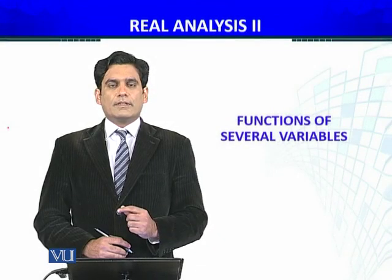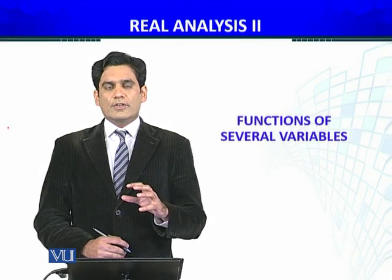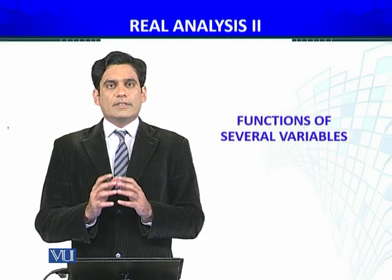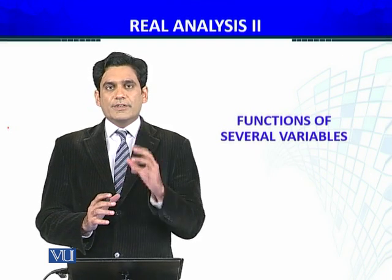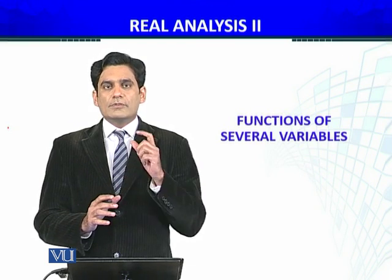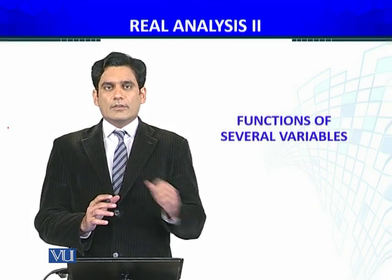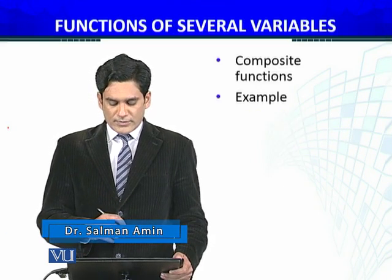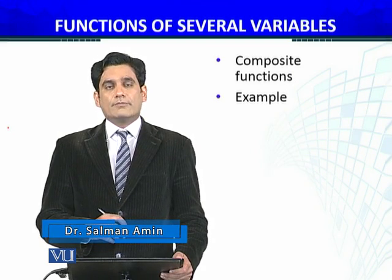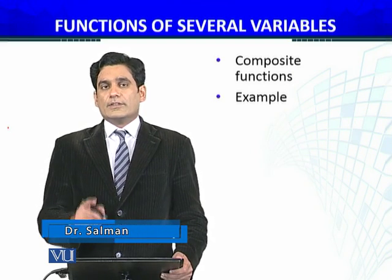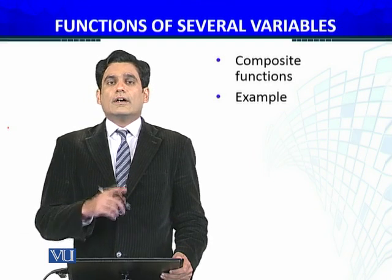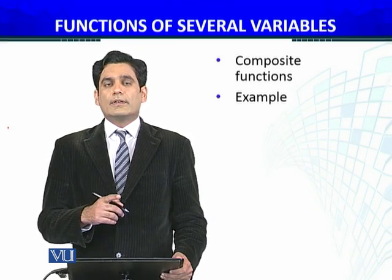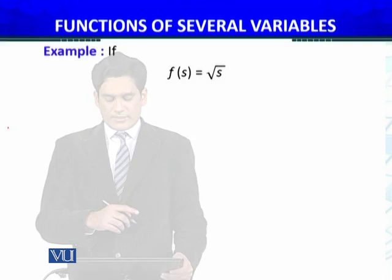We are going to discuss an example for the composite function — specifically, the composite function of a vector-valued function along with a function of several variables. We discussed this in the last module along with continuity. Now, we will continue with composite functions and apply the continuity of composite functions where the vector-valued function and functions of n variables are continuous at a certain point.